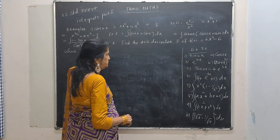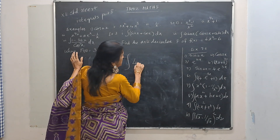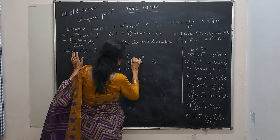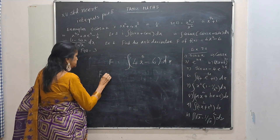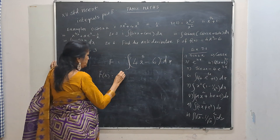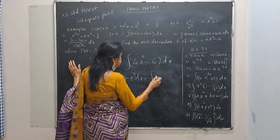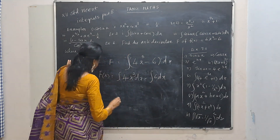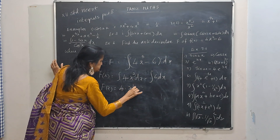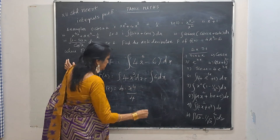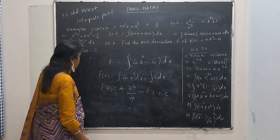We want the antiderivative, so f equals the integral of 4x cubed minus 6 dx. Splitting: integral of 4x cubed dx minus integral of 6 dx. This gives f(x) equals 4 into x to the power 4 by 4, minus 6x, plus c. To find c, he says f(0) is 3.